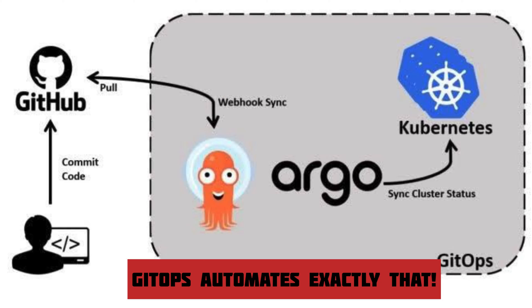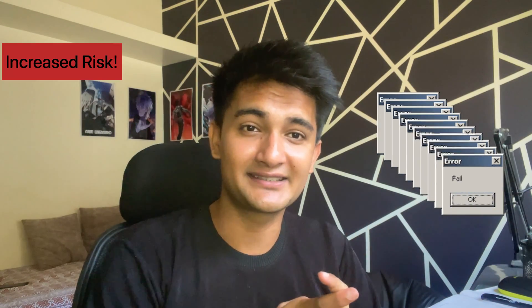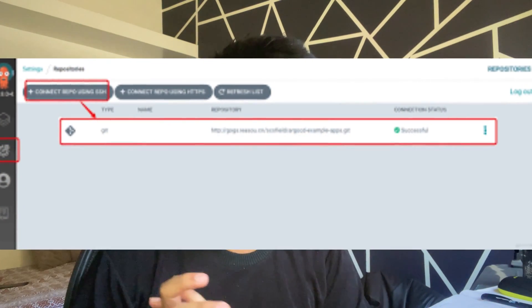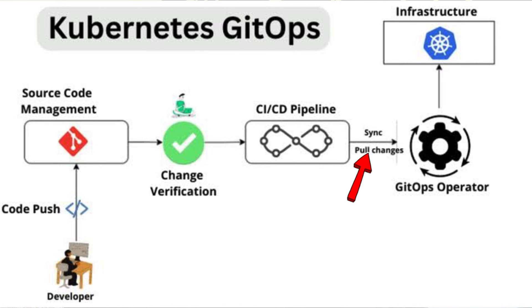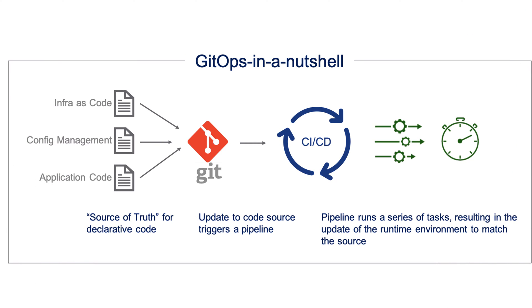GitOps automates exactly this process. Deploying or configuring things manually can cause issues like increased risk, slower deployment times, and difficulty in rollback. Instead, you can use GitOps tools like Argo CD and Flux CD, which use your Git repository as a single source of truth. You connect your Git repository with the GitOps tool, and it constantly checks for changes. If you change the image in a deployment manifest, you don't have to manually run kubectl apply — the GitOps tool automatically detects the change and synchronizes your application to match the desired state defined in your Git repository. And if there is any issue, it can roll back as well.